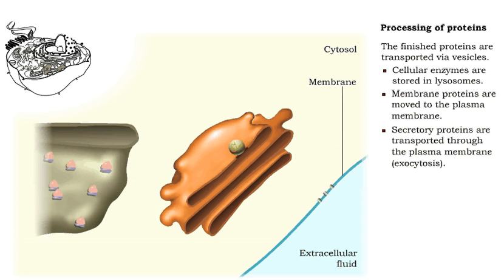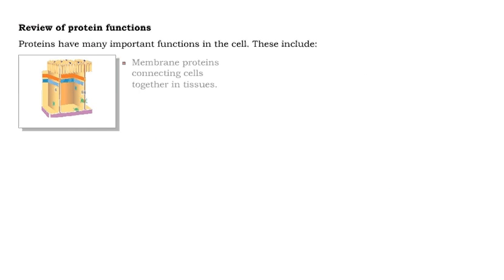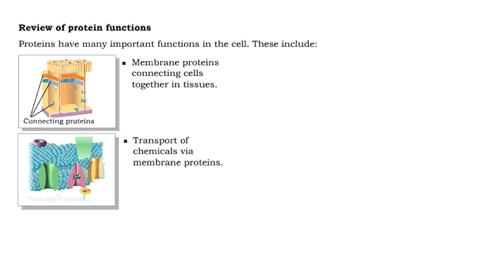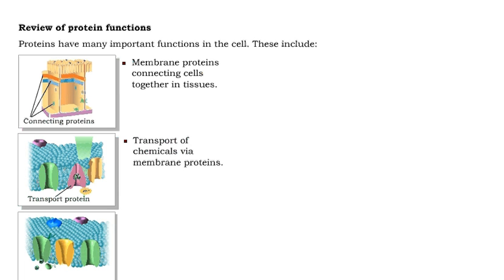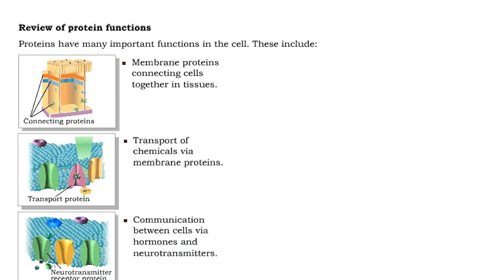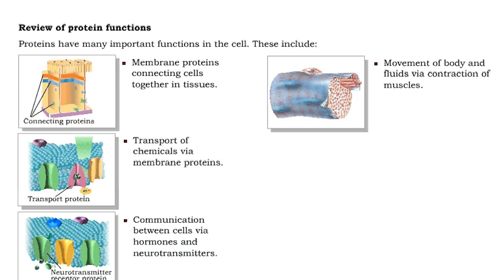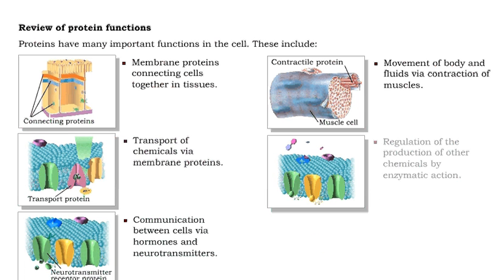Proteins are fundamentally important in providing many cell functions. Intercellular connections are the result of proteins. Important functions include the movement of nutrients, fluids, and information. Proteins are involved in cell responses to changes in internal and external environments, or homeostasis. Contractile proteins found in muscles are very important in moving fluids and the body in general. The most important of the proteins are enzymes, which regulate the appearance and activity of each cell by regulating cellular production of chemicals.